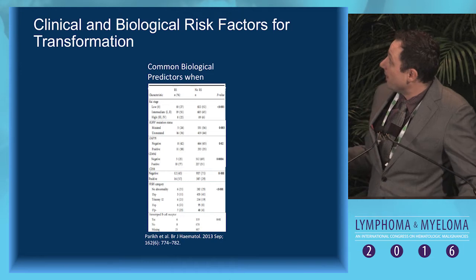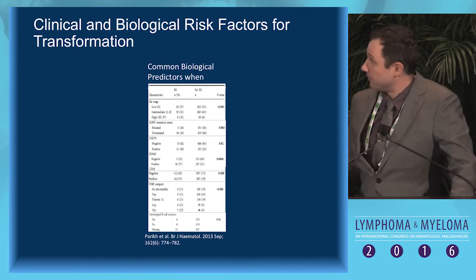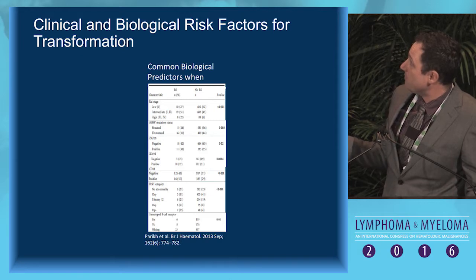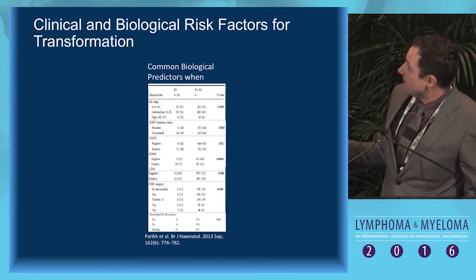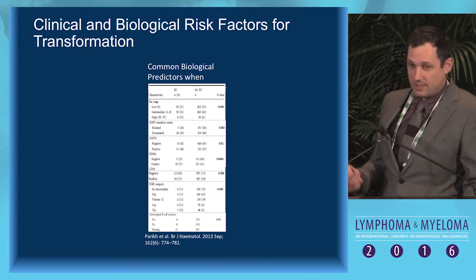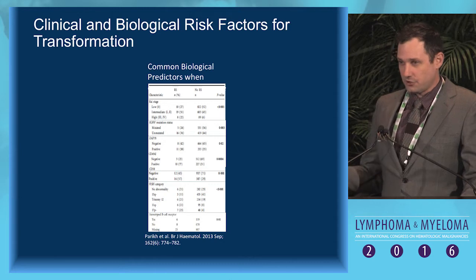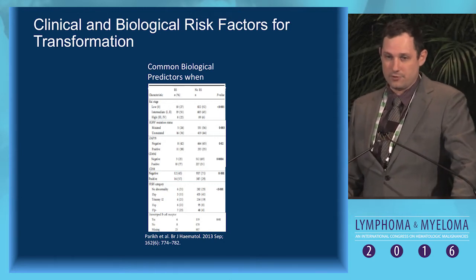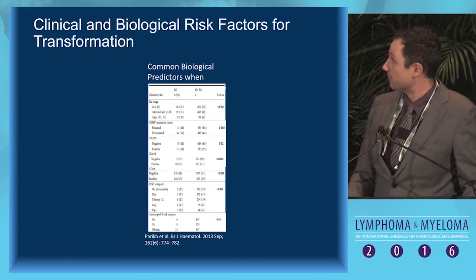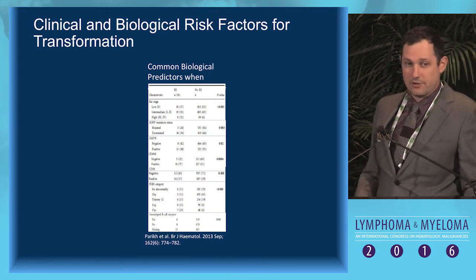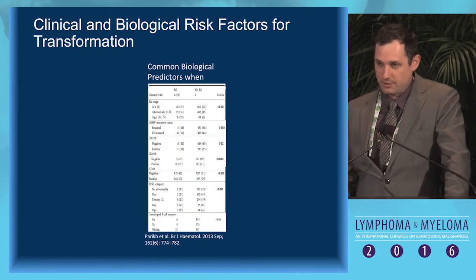When you look at common biological risk factors: unmutated IGHV mutation status confers higher risk, as does ZAP70, CD49D, and CD38 — these typical poor prognostic features for CLL in general are also predictive of potential Richter's transformation risk. We also discussed chromosomal abnormalities and the stereotype B-cell receptor, which we'll get into further.